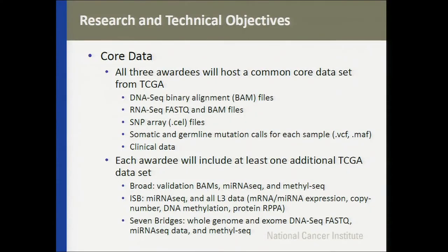Core data sets: all three awardees have to host a common set of core data, including all DNA-seq BAMs, RNA-seq FASTQ and BAMs, SNP array cell files, somatic and germline mutation calls (VCF and MAF files), and all clinical data. In addition, each awardee was required to have at least one additional TCGA data set. Broad chose to add validation BAMs, miRNA-seq, and methylseq. ISB is adding miRNA-seq as well as all level three data across all of TCGA. Seven Bridges has added whole genome and exome DNA-seq FASTQs, miRNA-seq data, and methylseq.